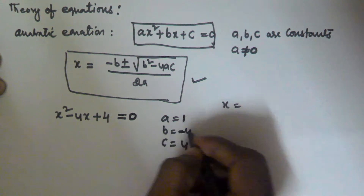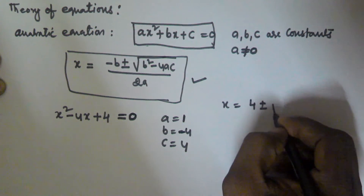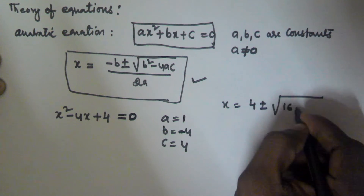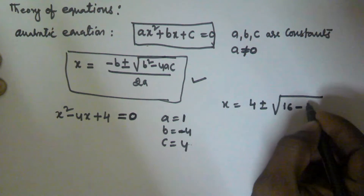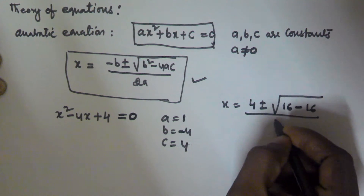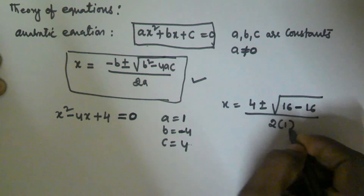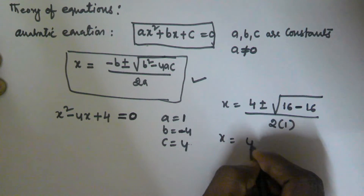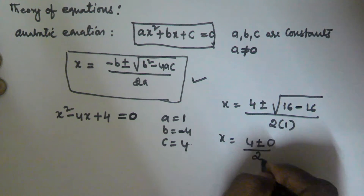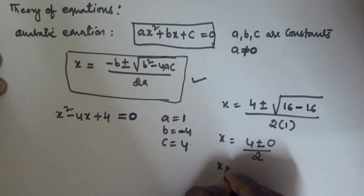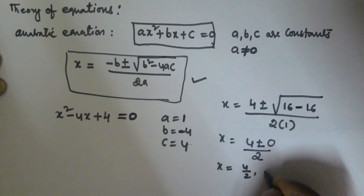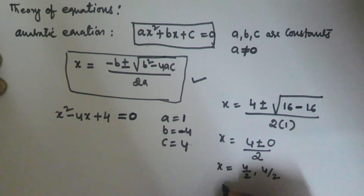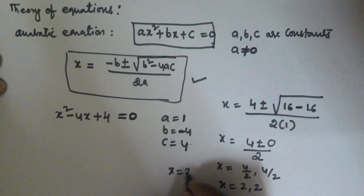Since b = −4, we get x = 4 ± √(16 − 4×1×4) / (2×1) = 4 ± √0 / 2. So x = 4/2 = 2 in both cases (taking plus or minus). Therefore x = 2.